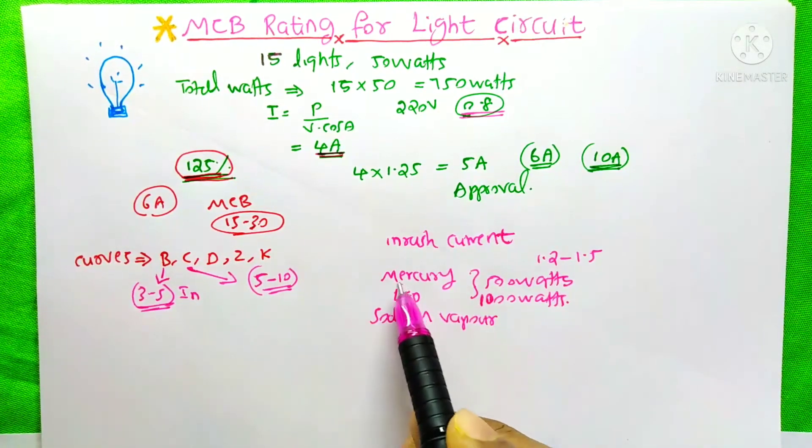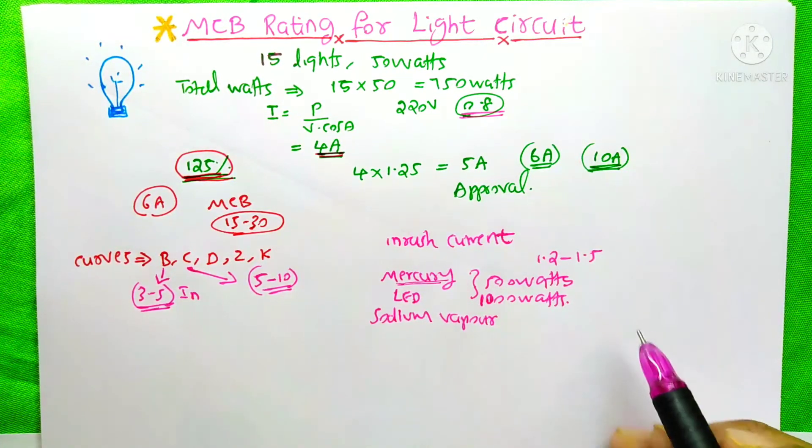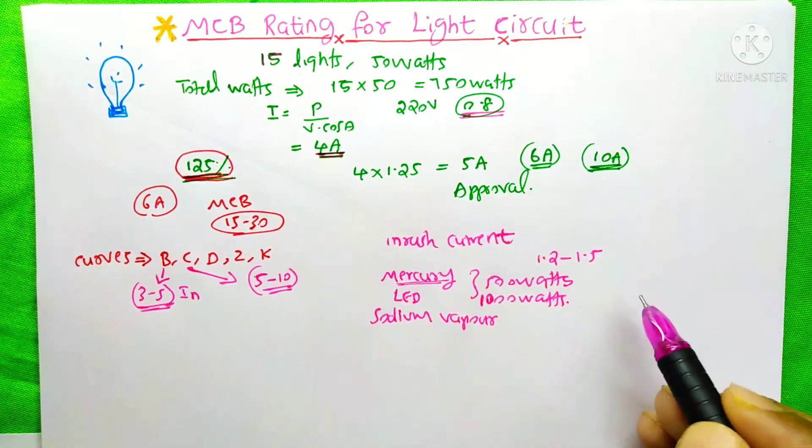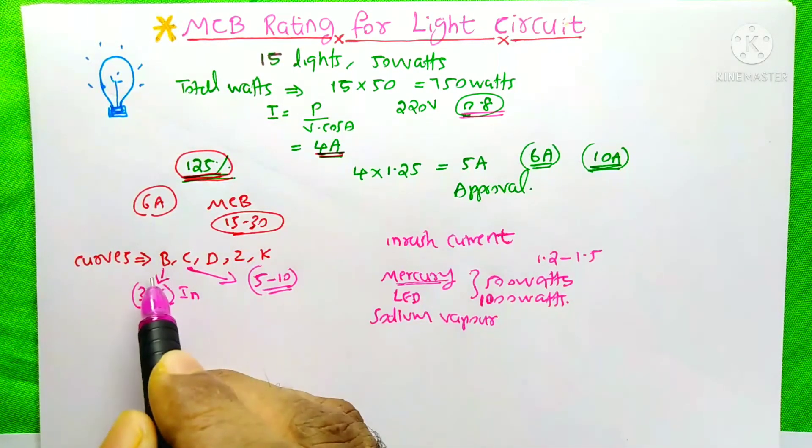Suppose you have light circuits with mercury lamp, LED, sodium vapor lamp with 500 watts or 1000 watts. Then you need to choose the C curve because it may have high inrush current on the starting of the circuit. For light circuits in our home, we just need the B curve - it's enough.